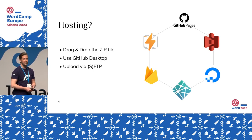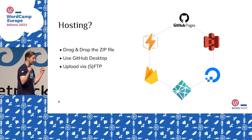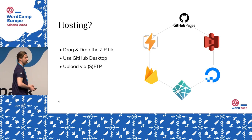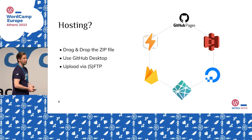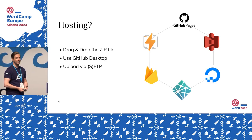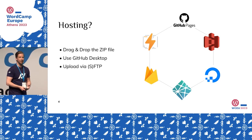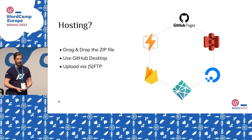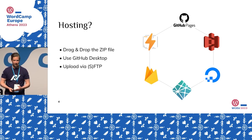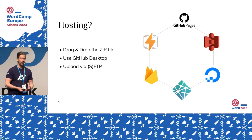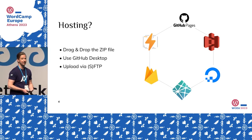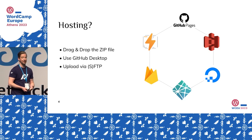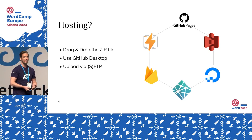If you're a fan of traditional deployment — meaning using SFTP and copying over your files — you can do that as well. The two most popular options here are DigitalOcean Spaces and Amazon S3.